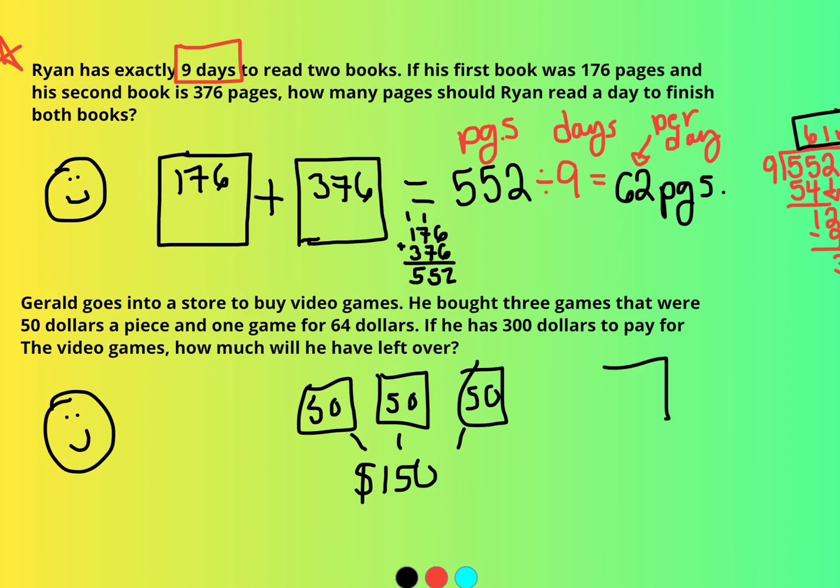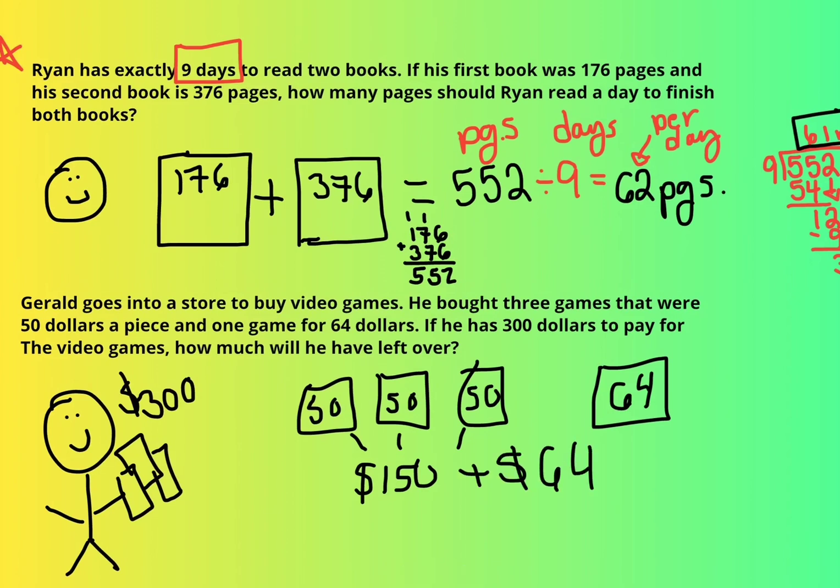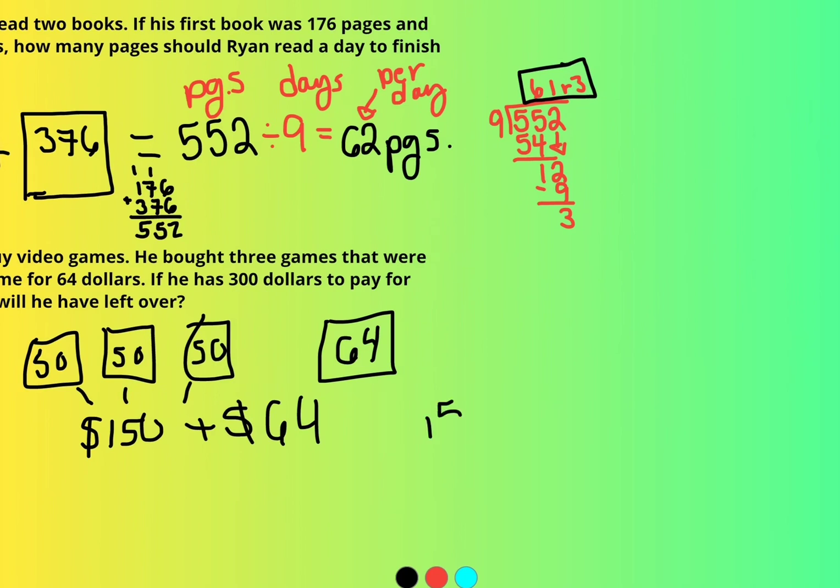Then he bought another game that was $64. If he walked into the store with $300, how much money is he going to have left? So I've got to figure out how much is this $150 plus this $64 to figure out how much money he spent. $150 plus $64. Because I'm trying to figure out how much money he spent on all the games. Four. Nope. Sorry. Four. Six plus five is 11. So the games, if I was to total up all the games, all of these games cost $214.